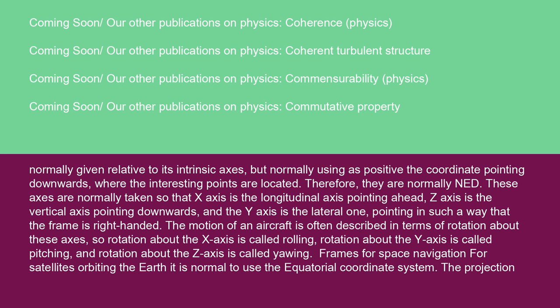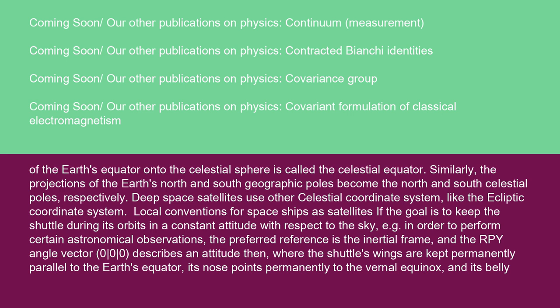Frames for space navigation: for satellites orbiting the Earth, it is normal to use the equatorial coordinate system. The projection of the Earth's equator onto the celestial sphere is called the celestial equator. Similarly, the projections of the Earth's north and south geographic poles become the north and south celestial poles respectively. Deep space satellites use other celestial coordinate systems, like the ecliptic coordinate system.